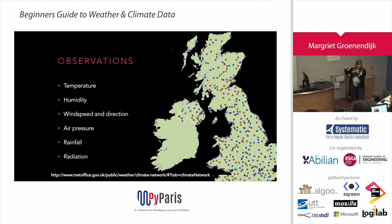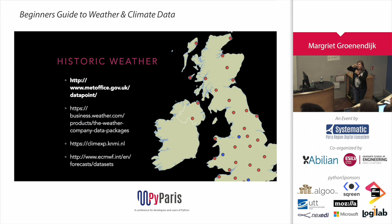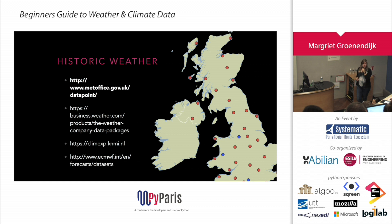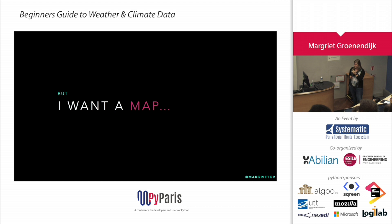There's a really good map from the Met Office in the UK showing observation locations. For different data, there's the Weather Company API which you have to pay for, or you can get the free version through Bluemix. KNMI, the Dutch weather service, has a lot of data in their Climate Explorer with a nice interface. Or ECMWF — they run and combine lots of different datasets, which is a really huge amount of data you can find there. So there's lots to find quite easily.